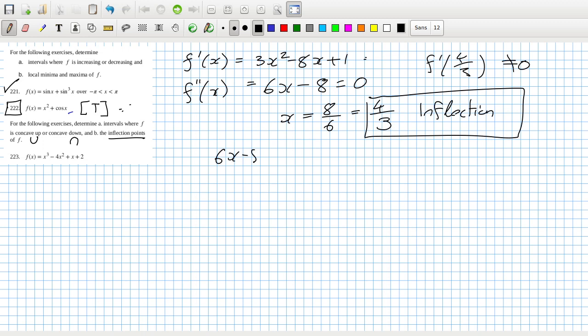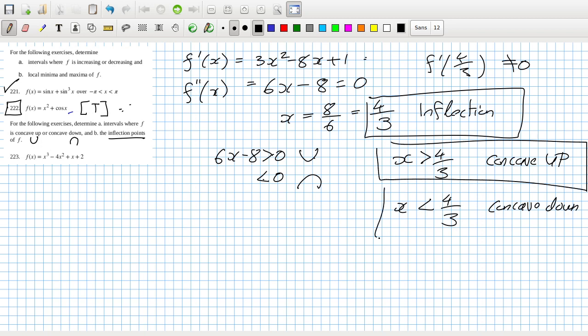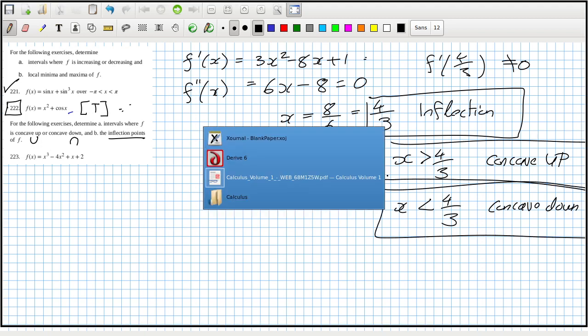Now, 6x minus 8 positive and then negative. Positive, so we'll have x more than 4 over 3 and x less than 4 over 3. Positive is this shape and negative is this shape. So that's concave up, or I call it convex, and this is concave down, or as I call that concave. Right, let's check the answer.